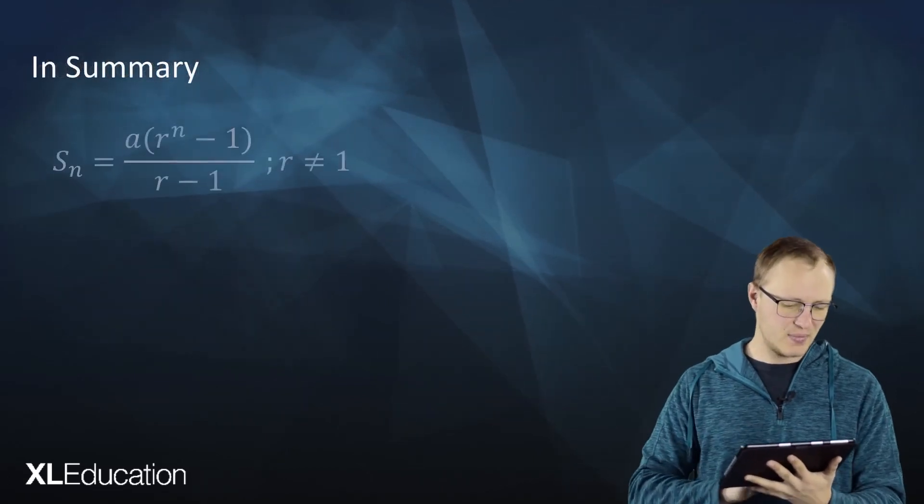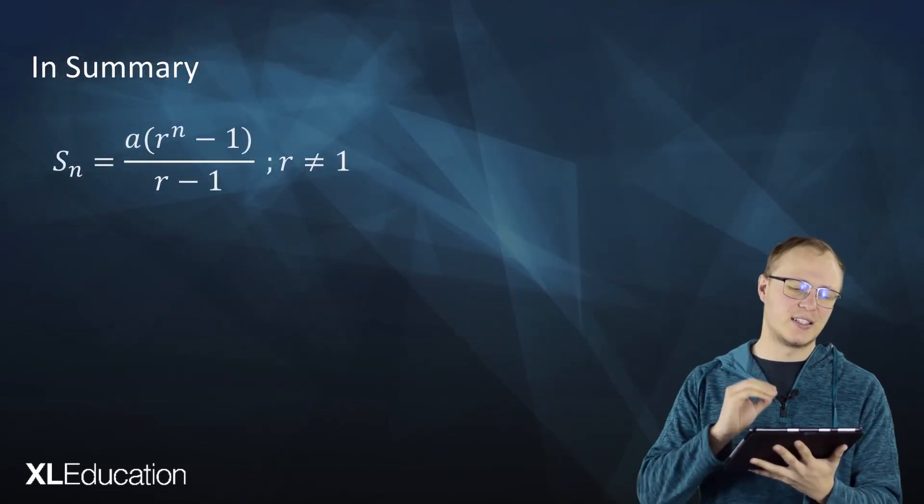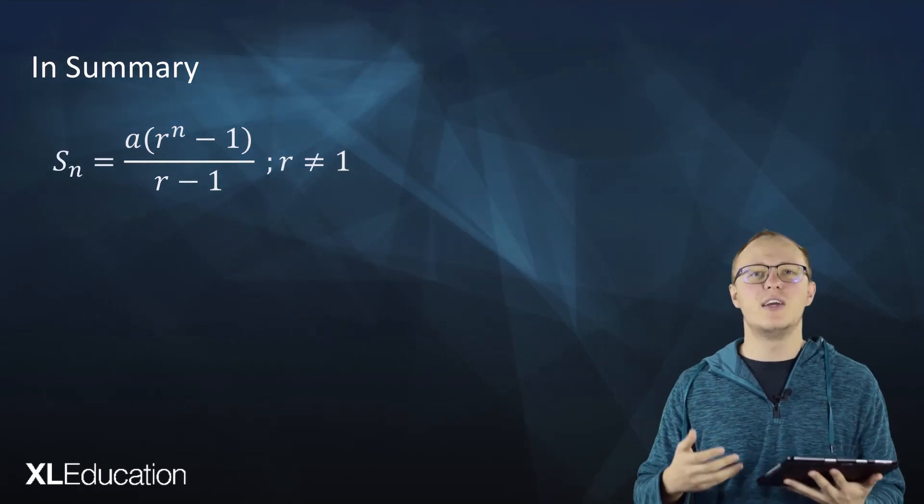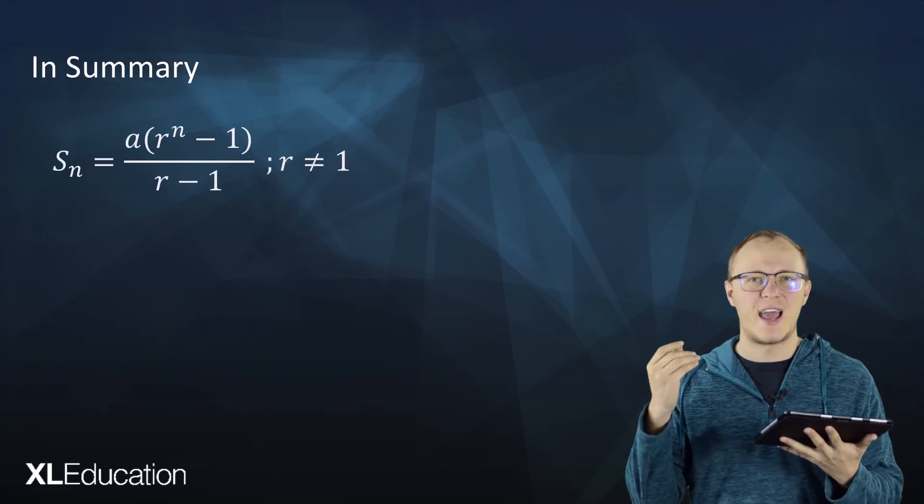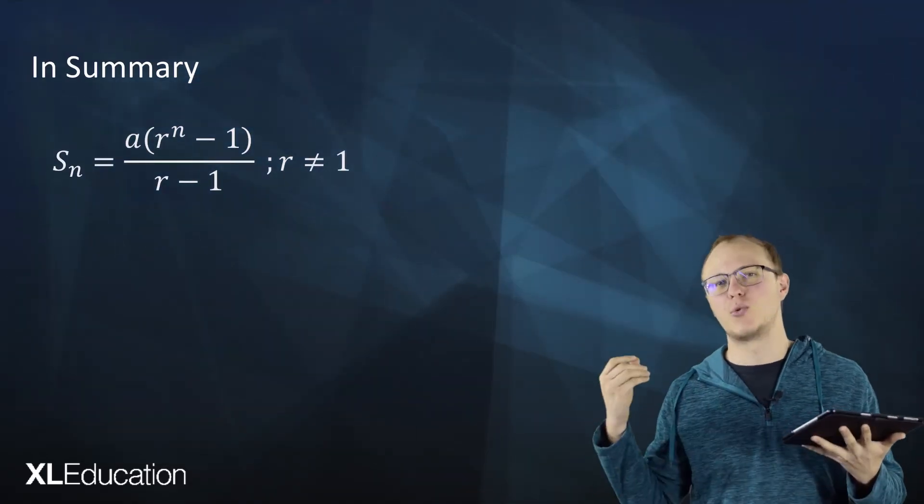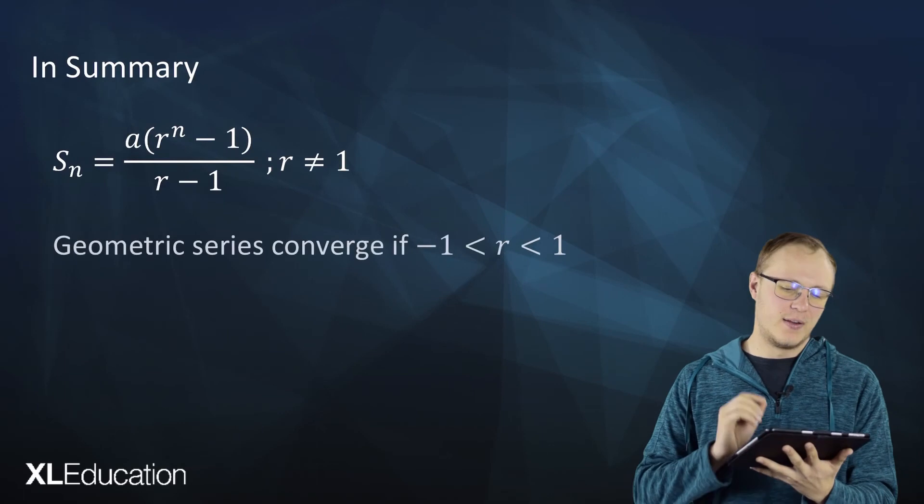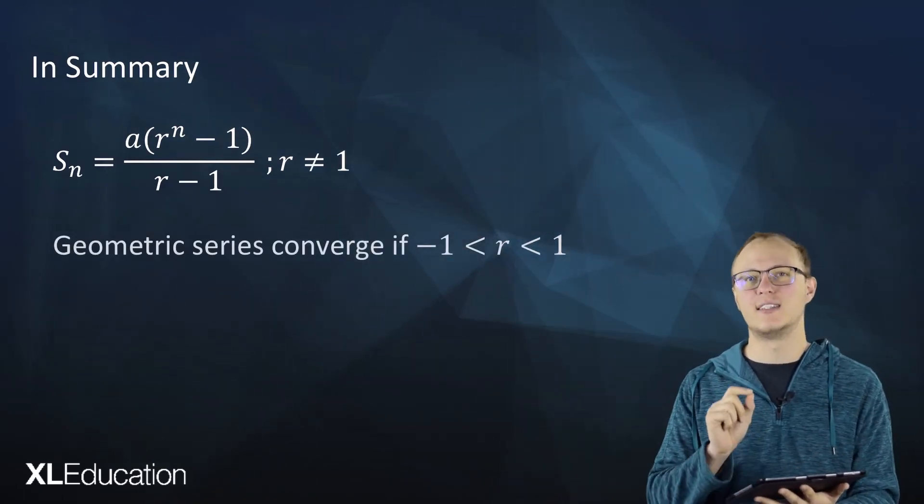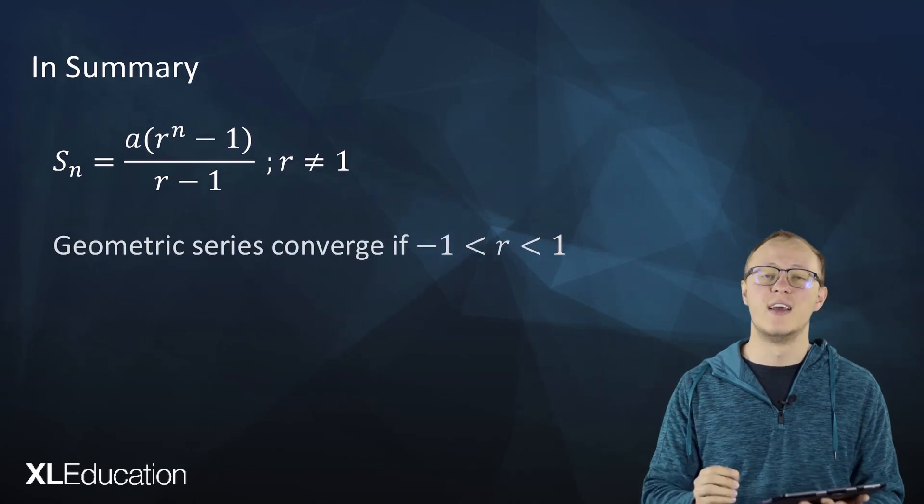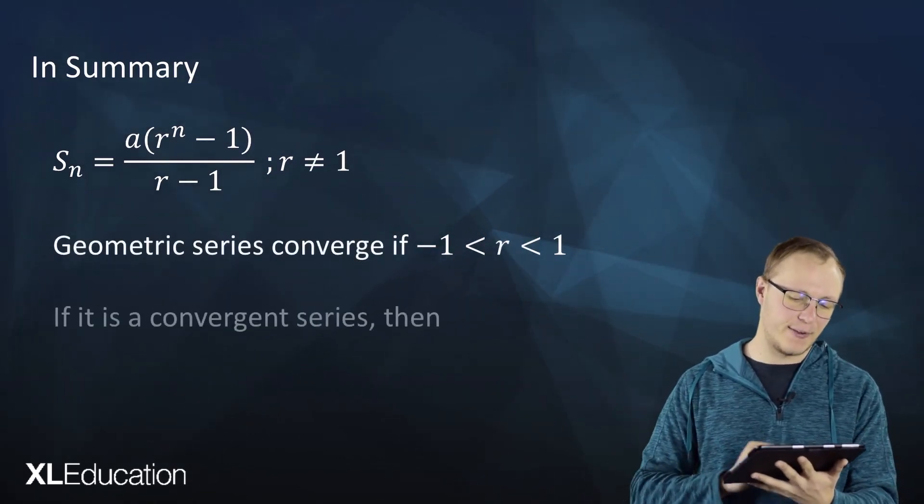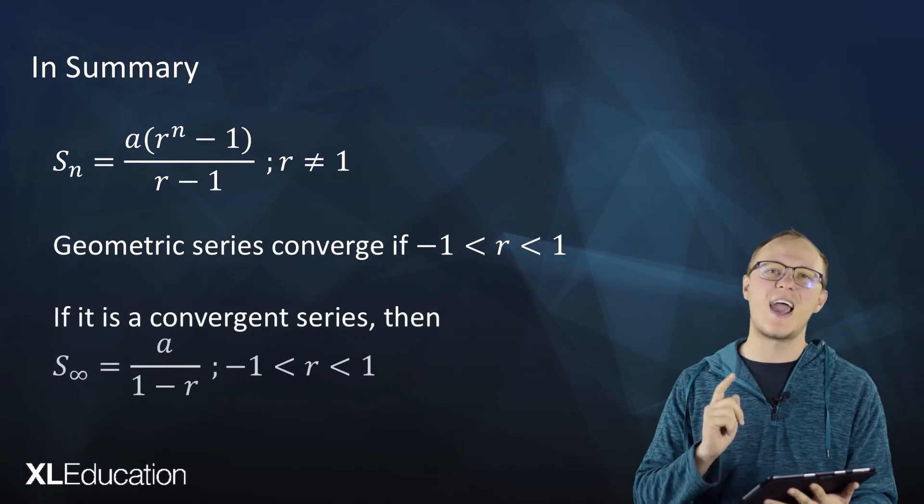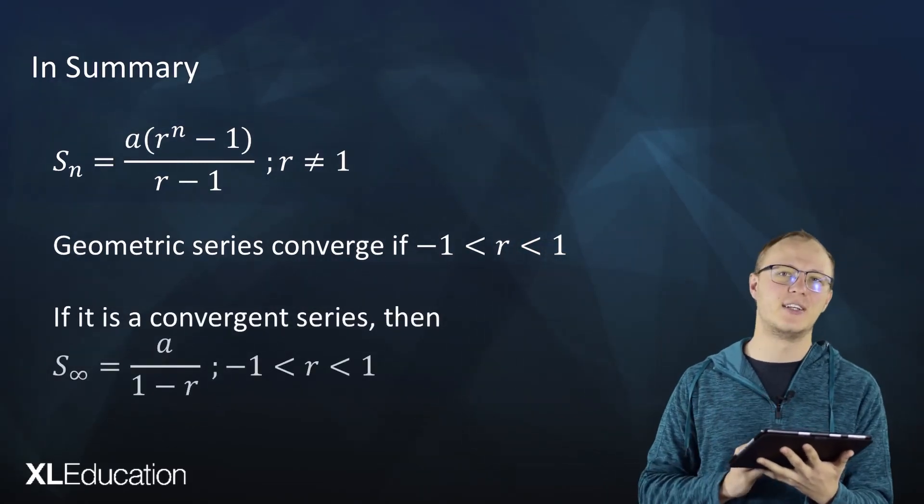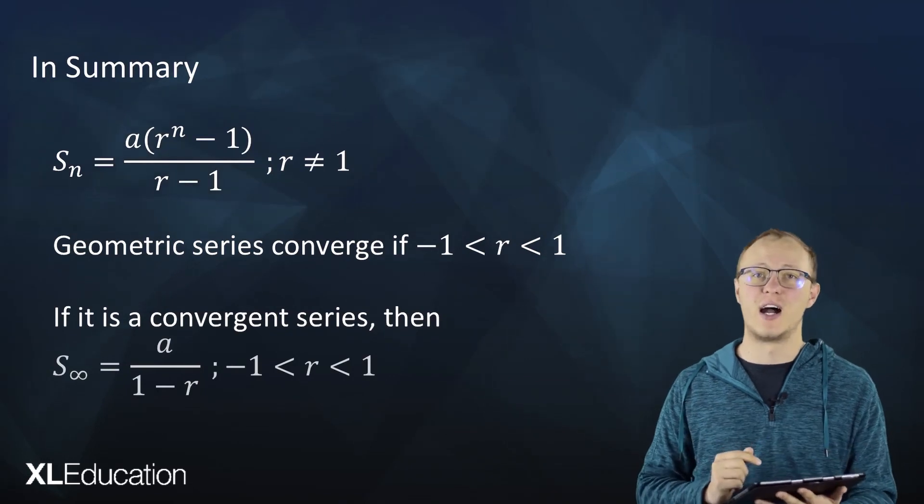In summary, Sn equals a(r^n - 1) divided by r minus 1 for any geometric series that we're adding up when we know how many terms we are adding up. Geometric series converge if negative 1 is less than r is less than 1. In other words, r is a fraction. And if it converges, we can find the sum to infinity using the formula: S infinity equals a over 1 minus r.